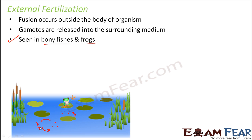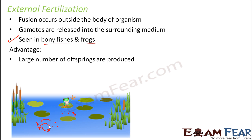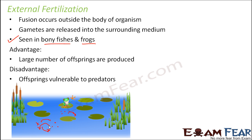In external fertilization, a large number of gametes are released into the water by both sexes. The advantage is that a large number of offspring are produced because so many gametes are spread in the water and fusion keeps occurring. However, the disadvantage is that the offspring are vulnerable to predators — the tiny new organism is just lying in water, so very few of them survive as most are eaten by predators.